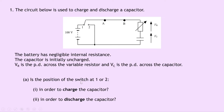Part A asks for the position of the switch — at 1 or 2 — in order to charge the capacitor. To charge the capacitor, we need the battery or supply to be connected to the capacitor. To allow current to flow, we need the switch open, which means it needs to be connected at position 1. So position 1 is the answer for charging.